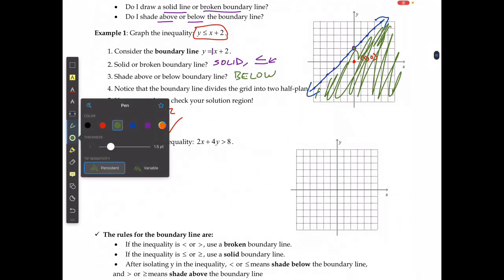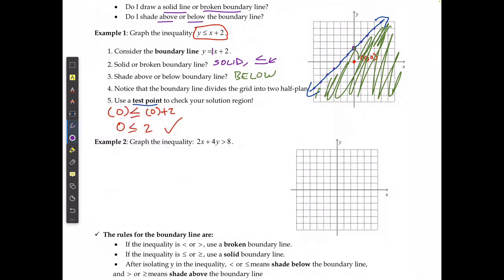For the second example, the first thing I need to do is isolate y. Remember, if I need to multiply or divide by a negative, I flip the inequality sign. Starting with 2x + 4y > 8: subtracting 2x gives 4y > -2x + 8, then dividing everything by 4 gives y > -½x + 2.